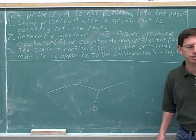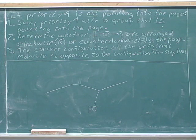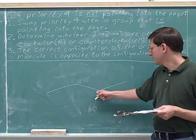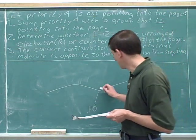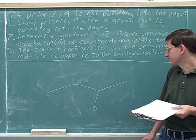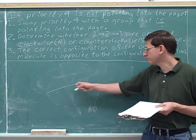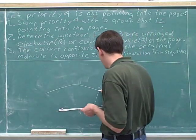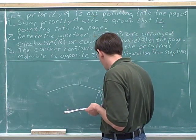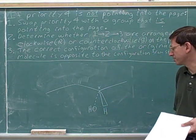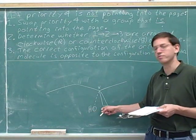Determine whether this stereocenter is R or S. First, we have to find the stereocenter. This carbon is the stereocenter because it's attached to four different groups. I'm going to put an asterisk in to indicate that. It's attached to four different groups: a methyl group, an ethyl group, a hydroxy, and a hidden hydrogen. We should draw in that hidden hydrogen. Since the hydroxy is on the dash, the hidden hydrogen must be on the wedge.